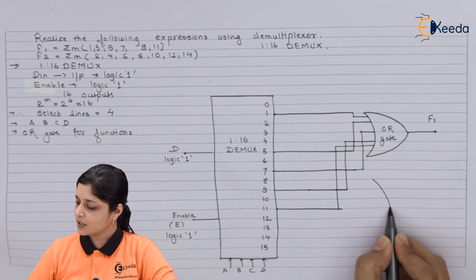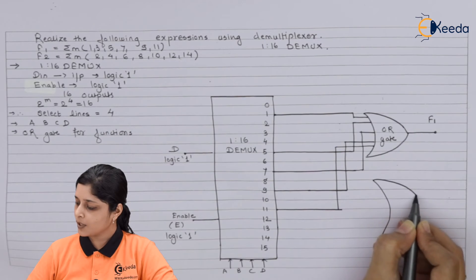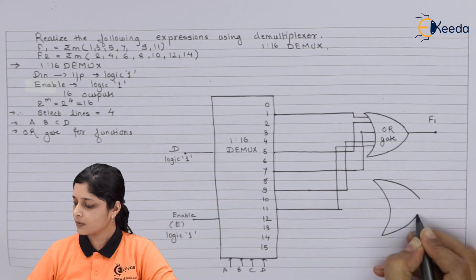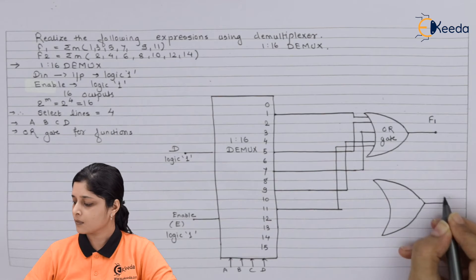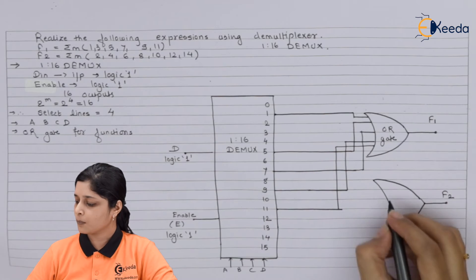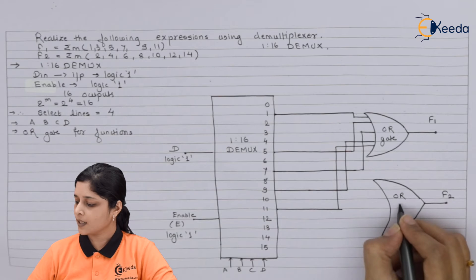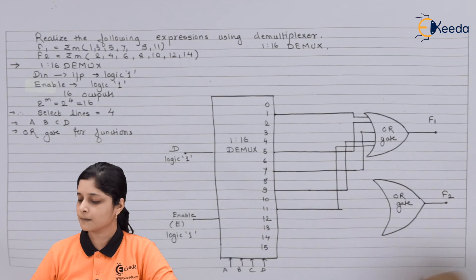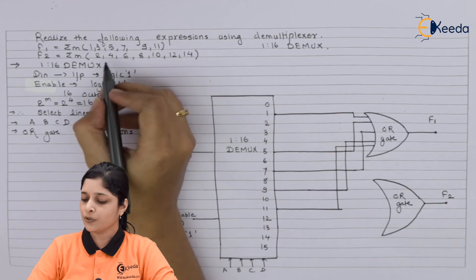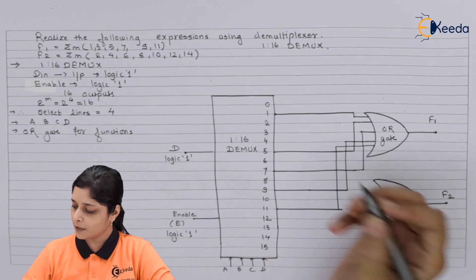Now for the second function you have to again draw one OR gate. We are going to define output f2. We are going to define output f2 here OR gate. Then again you have to focus on all these minterms present over here.